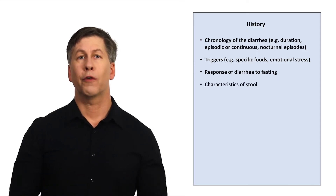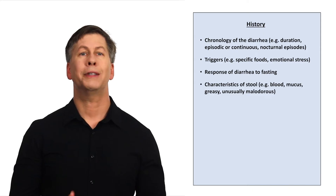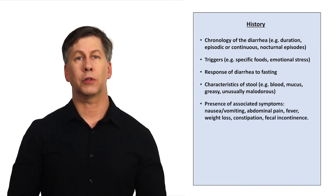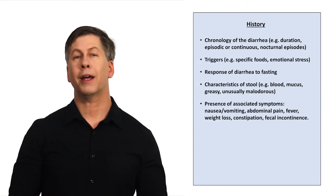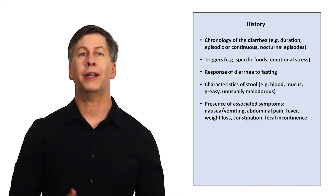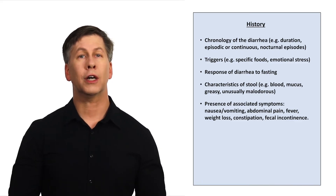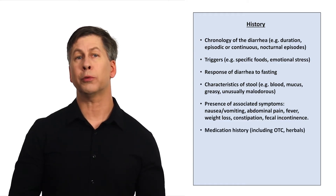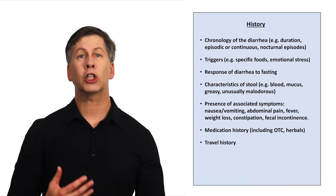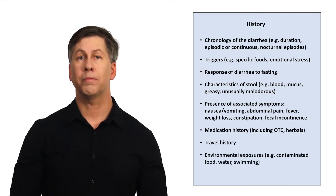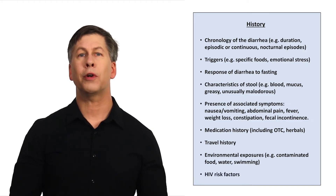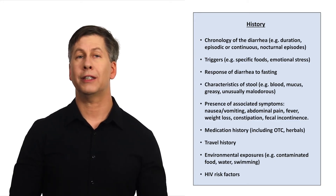What are the characteristics of stool? For example, does it contain blood or mucus? Is it greasy or unusually malodorous? Are there associated symptoms, including nausea and vomiting, abdominal pain, fever, weight loss, alternating constipation, or fecal incontinence? Ask the patient what medications they're on, including over-the-counter drugs and herbals. Travel history and possible environmental exposures are both very important. And lastly, ask about HIV risk factors, as the probability of an infectious etiology is dramatically increased if the patient also has HIV.